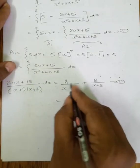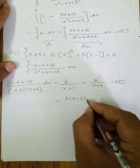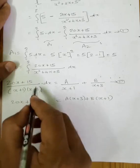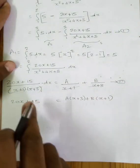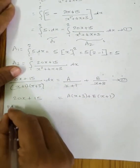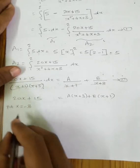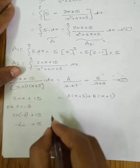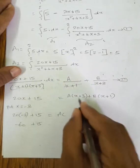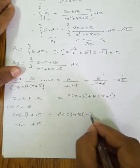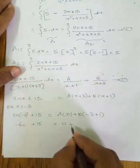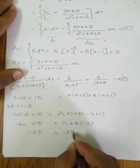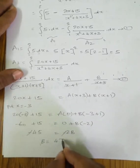Cross-multiplying: 20x+15 = A(x+3) + B(x+1). Substituting x = −3: 20(−3)+15 = −60+15 = −45 = B(−2), so B = 45/2. Substituting x = −1: 20(−1)+15 = −5 = A(−1+3) = 2A, so A = −5/2.